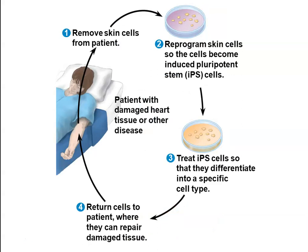If we take cells from an individual and reprogram them to act as stem cells, we can then provide those iPS cells with the chemical signals needed to form specific cell types. Since we are essentially taking cells from the individual and returning them to that same individual, this approach helps avoid the foreign rejection issues that arise when obtaining tissues from another person, and hopefully allows repair of any damage.